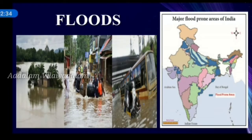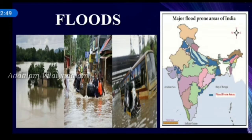Children, look at the map showing the major flood prone areas in India. The Gangetic plains covering the states of Punjab, Haryana, Uttar Pradesh, North Bihar, West Bengal and Brahmaputra Valley are the major flood prone areas in north and northeast India. The other regions are coastal Andhra Pradesh, Odisha and southern Gujarat.